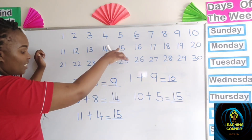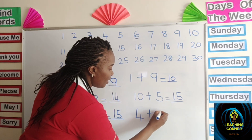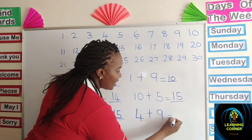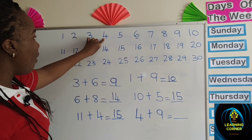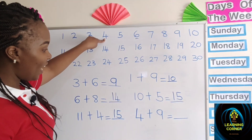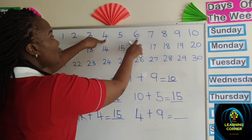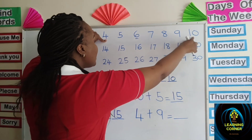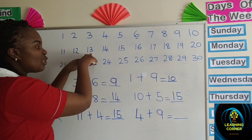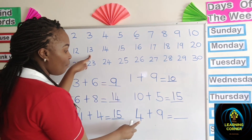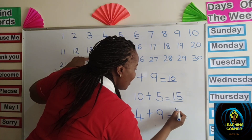Let us try another one: four plus nine. We are going to find the total sum of four plus nine. Where is number four? Here is number four. How many times forward do we count? Nine times. So I start here: one, two, three, four, five, six, seven, eight, nine. Where did we stop? We stopped at thirteen, meaning the total sum of four plus nine is thirteen. I come here and write thirteen.